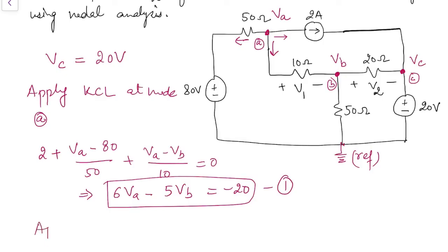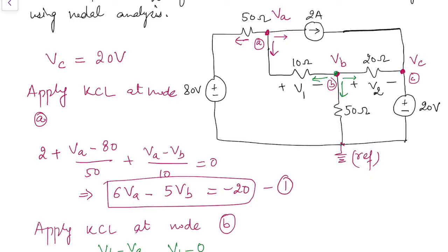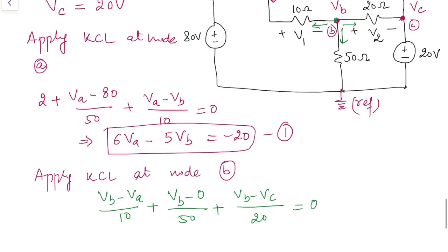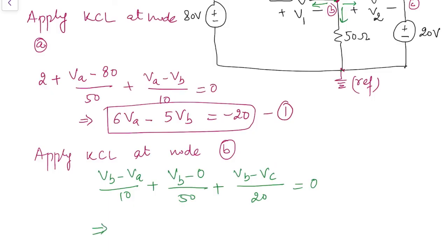Then we apply KCL to node B, again assuming all currents are leaving. The current through the 10 ohm resistance is (VB minus VA) / 10, through the 50 ohm resistance is VB / 50, and through the 20 ohm resistance is (VB minus VC) / 20. Substituting VC equals 20 and simplifying, separating the terms of VA, VB, and VC, gives the second equation: minus 10VA plus 17VB equals 100.